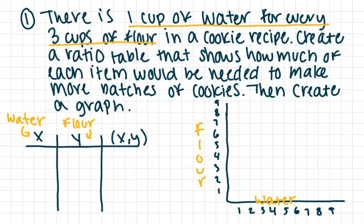So it says one cup of water for every three cups of flour. Let's go ahead and start filling in this ratio table. One cup of water, three cups of flour. Now to put this on our graph, water is going to represent my x's and flour is going to represent my y's. So I'm going to rewrite these ratios as coordinates for my graph.